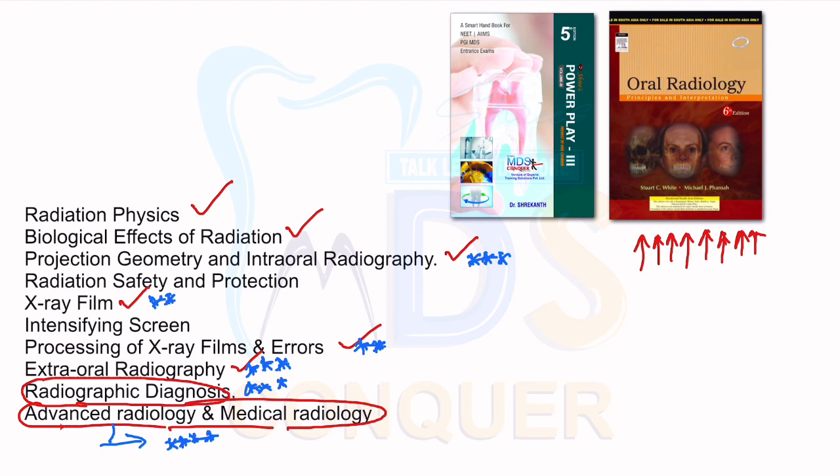But whenever you want to find a reference or have clarity over something — whether it's a controversial question or a key correction in the MCQ books — make sure you go with White and Farr only. And as I already said, there are around 20 to 25 pages of well-organized synopsis prepared from White and Farr straight from your Power Playbook Volume 3.